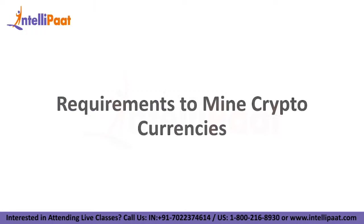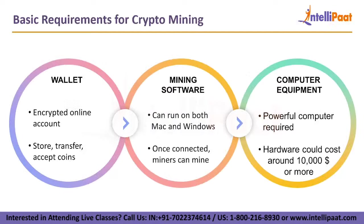Requirements to mine cryptocurrencies come down to just three things. First, a wallet — an online encrypted payment account that enables miners to accept, store, and transfer cryptocurrencies. Examples include Exodus, Trezor, and Coinbase. Second, mining software, which can run on both Windows and Mac platforms; once installed and connected, miners can start mining. Third, computer equipment — the specific hardware required is called an ASIC, or application-specific integrated circuit, which costs about $10,000 US dollars or more.